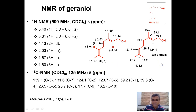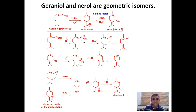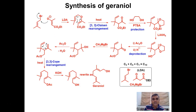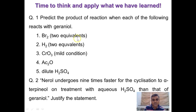In this way we have completed the discussion of the chemistry of geraniol. We have discussed the NMR, oxidation reactions, the conversion of nerol into various terpenoid molecules, why nerol reacts nine times faster than geraniol, the interesting synthesis of geraniol, and the structure determination. Now it is time to think about examination questions. Students may be asked to predict the products of reactions of geraniol with bromine, hydrogen, CrO3 oxidation, acetic anhydride, or dilute acid.